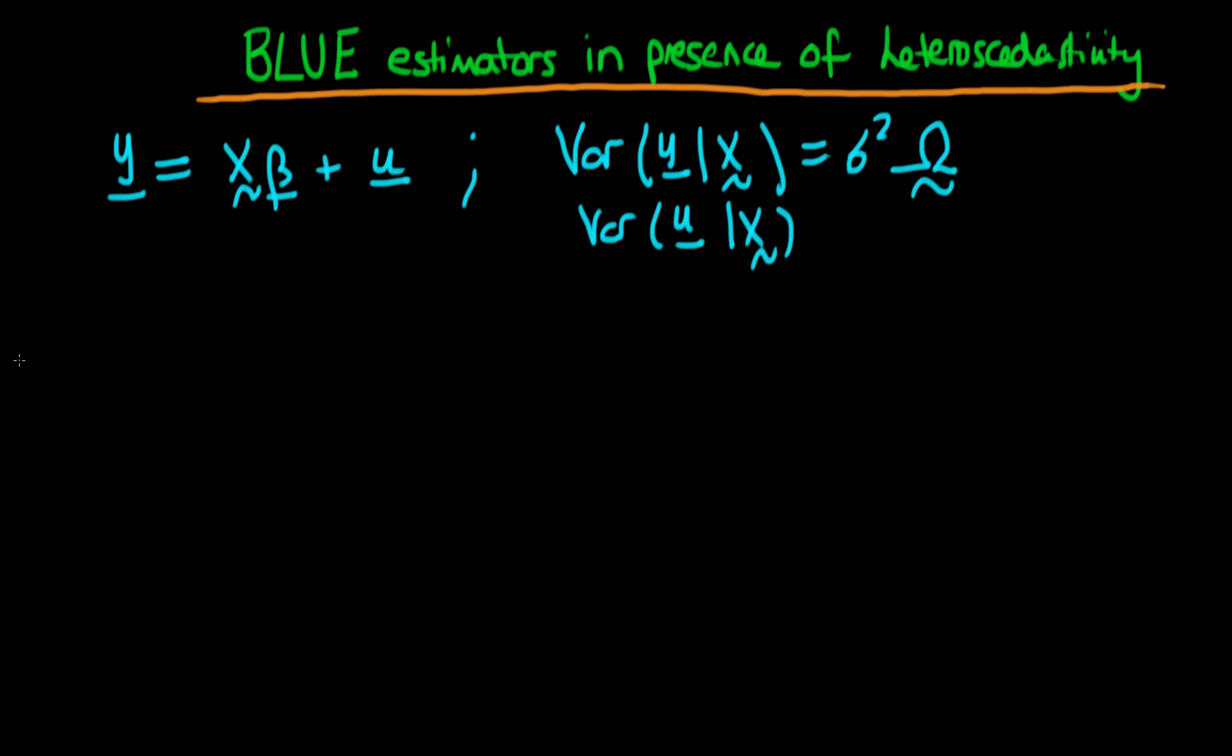Okay, so we know that beta hat OLS, or the expression for beta hat OLS, is just equal to X prime X to the power minus 1 times X prime times y.